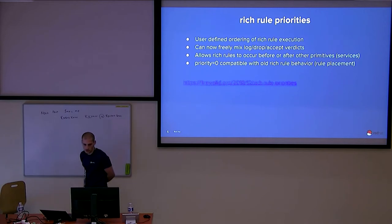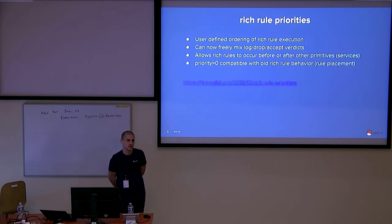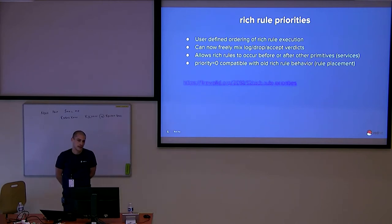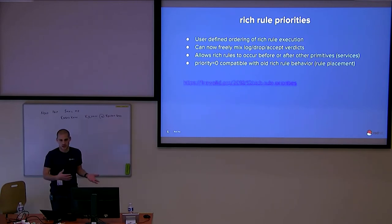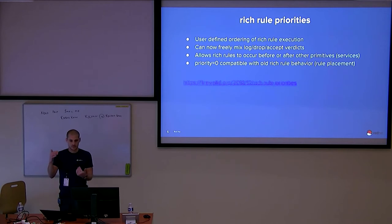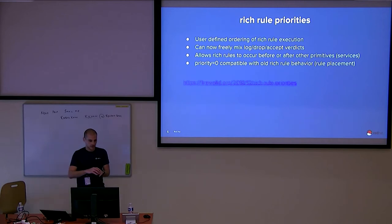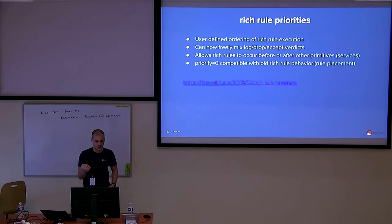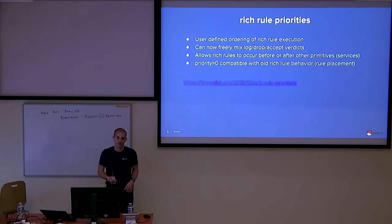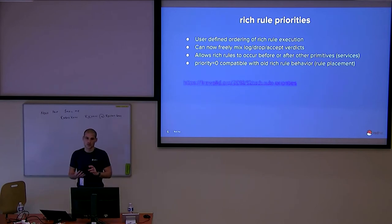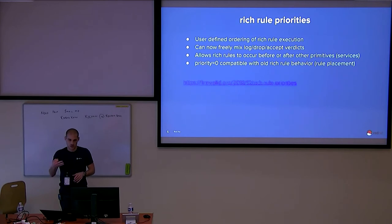The next major feature is rich rule priorities. As I mentioned at the start, FirewallD has a custom syntax for rules for more advanced users — that's what we call rich rules. In the past, based on what type of rule you had — whether it was allowing or denying traffic — it would automatically be sorted into a position in the rule set. You had no control over where the rule got placed. So this feature adds a priority field, allowing the user to arbitrarily order these custom rules. One consequence is it allows you to freely mix your log rules, deny rules, and accept rules, rather than having FirewallD sort them.